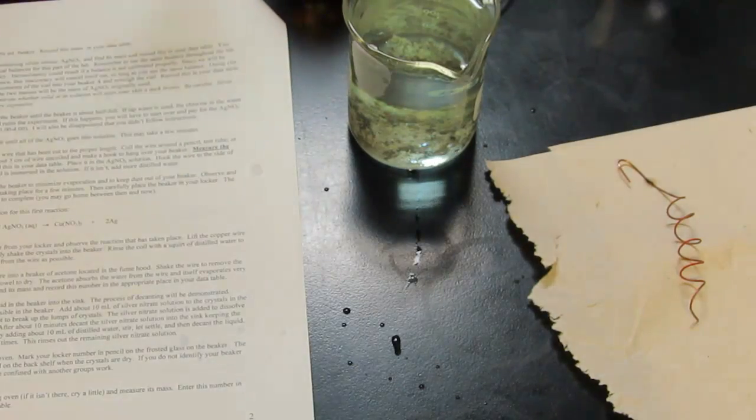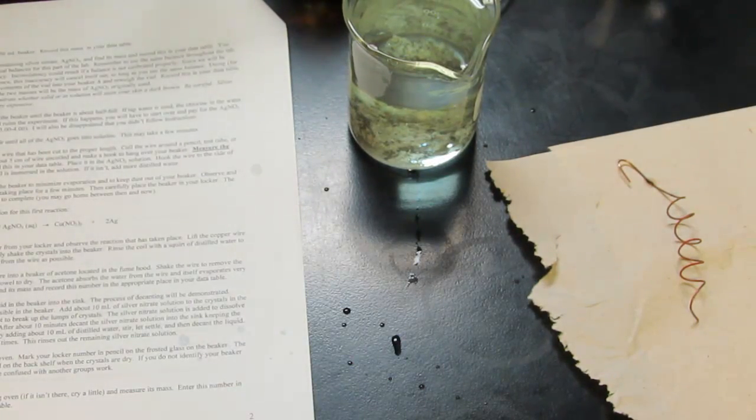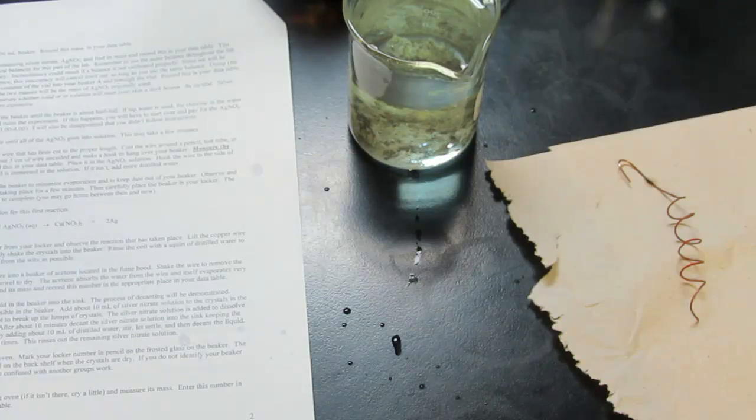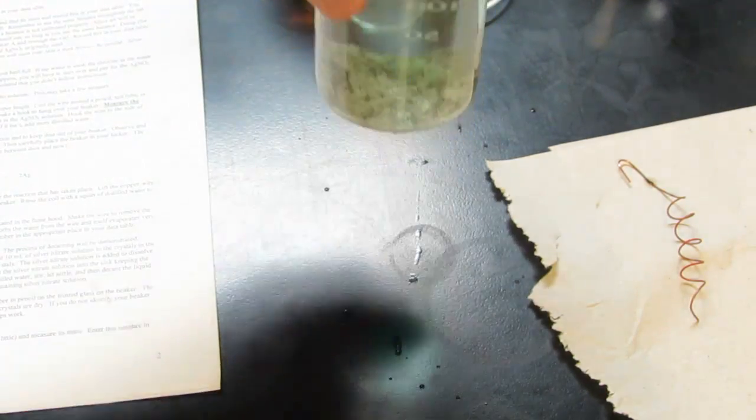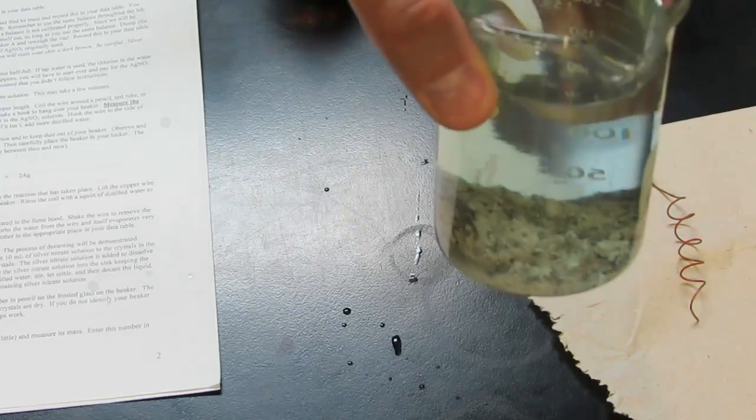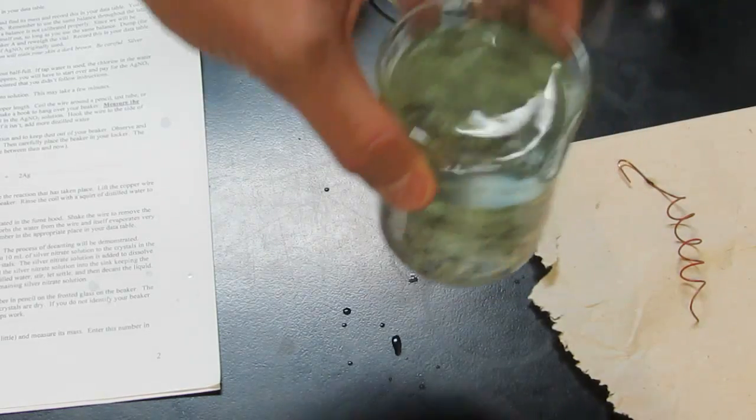We'll get our balance set up because we're going to be needing that in a bit to find the mass of our copper wire. That way we can determine how much copper reacted. Now you'll notice that we have a bunch of silver on the bottom of that beaker and we need to decant the water.